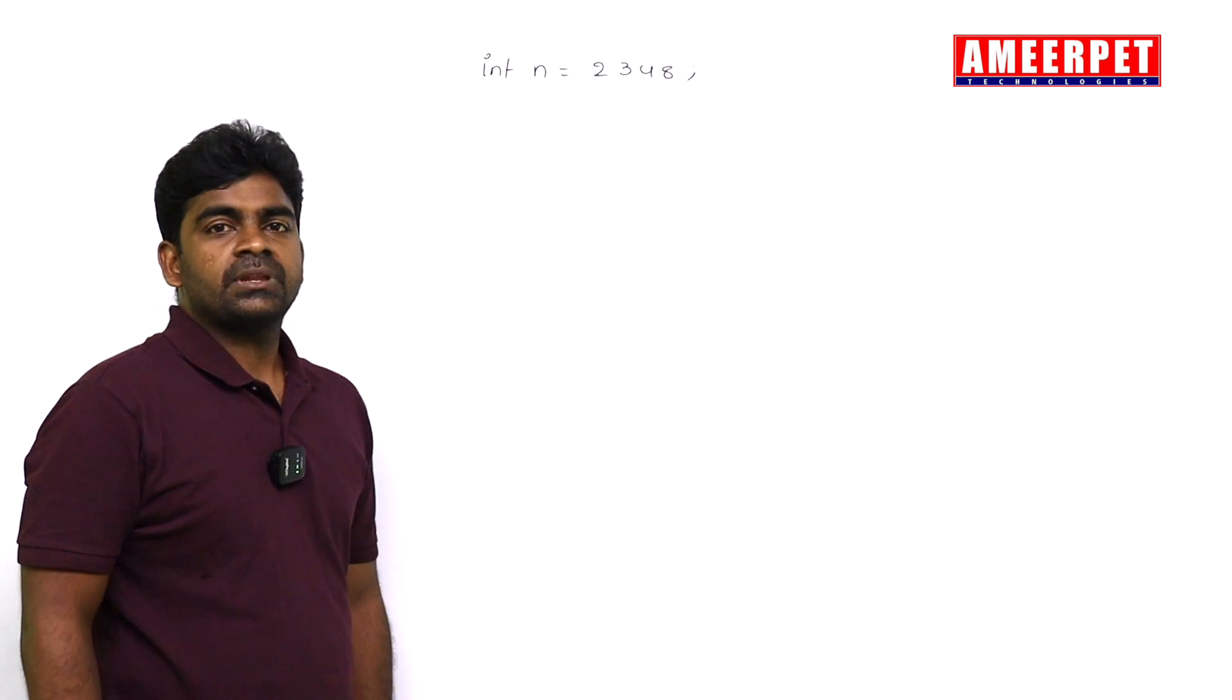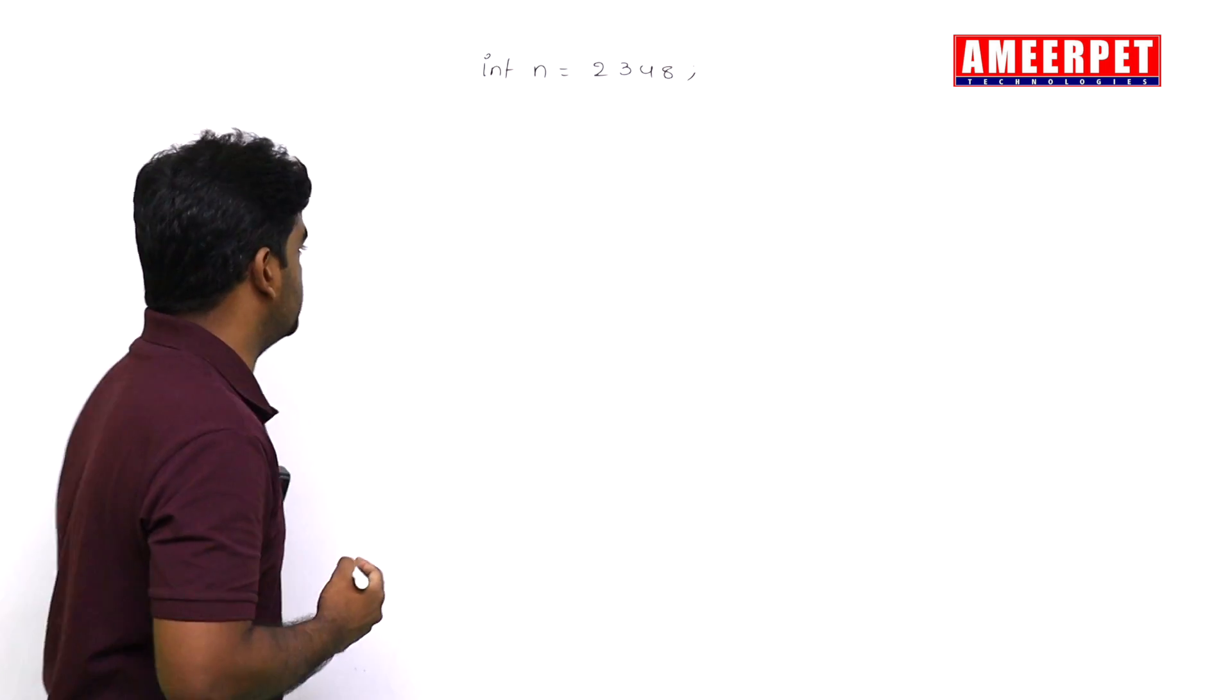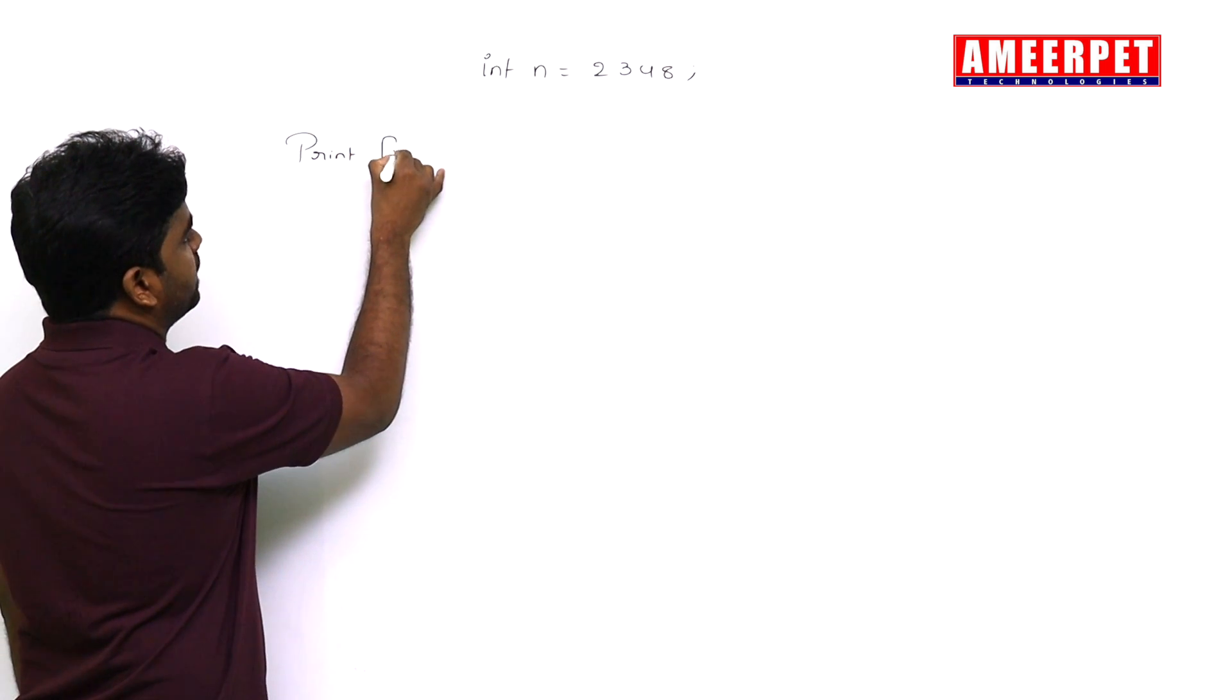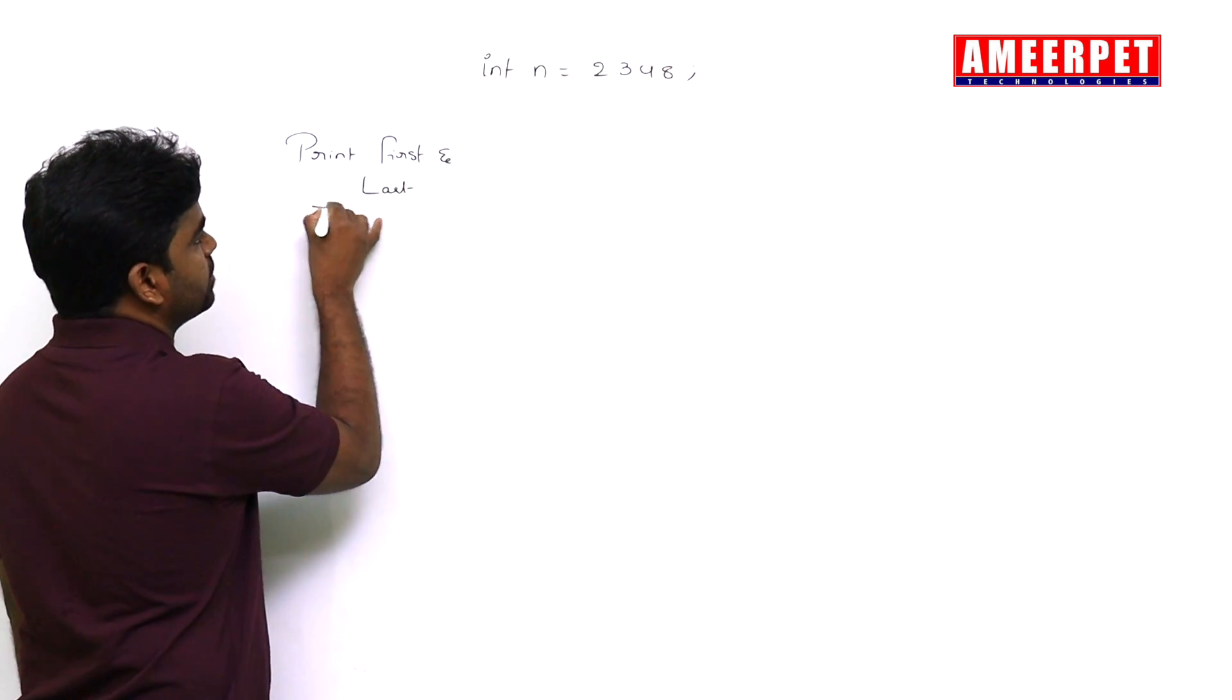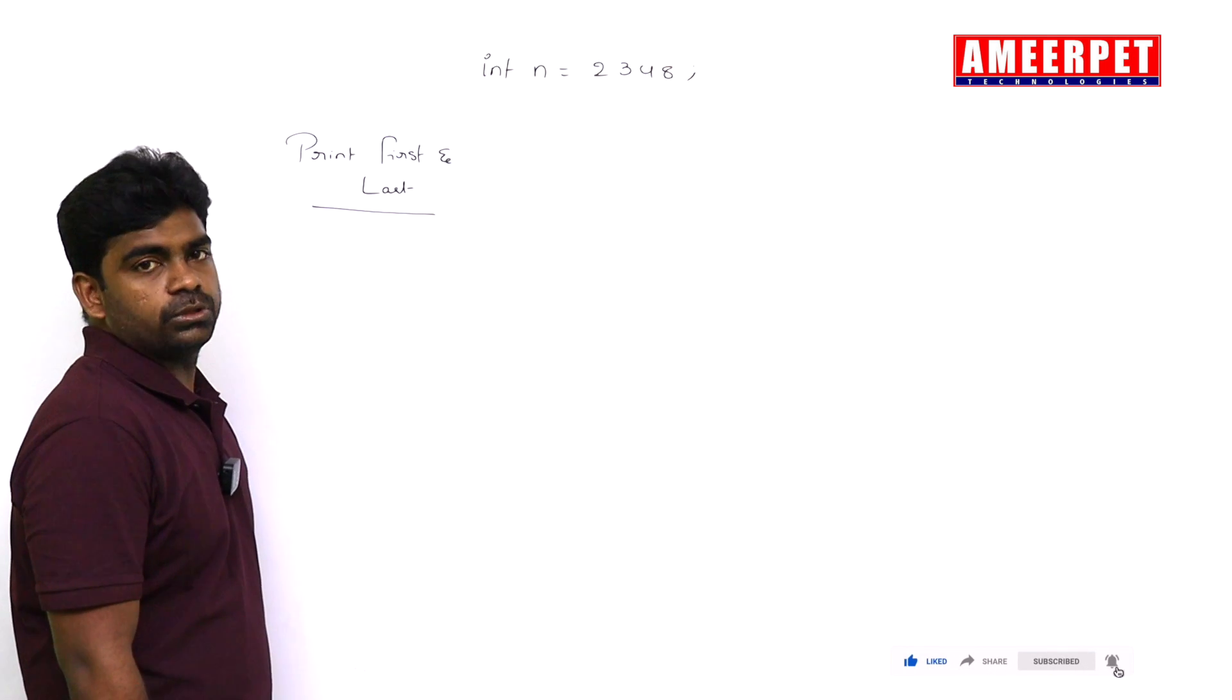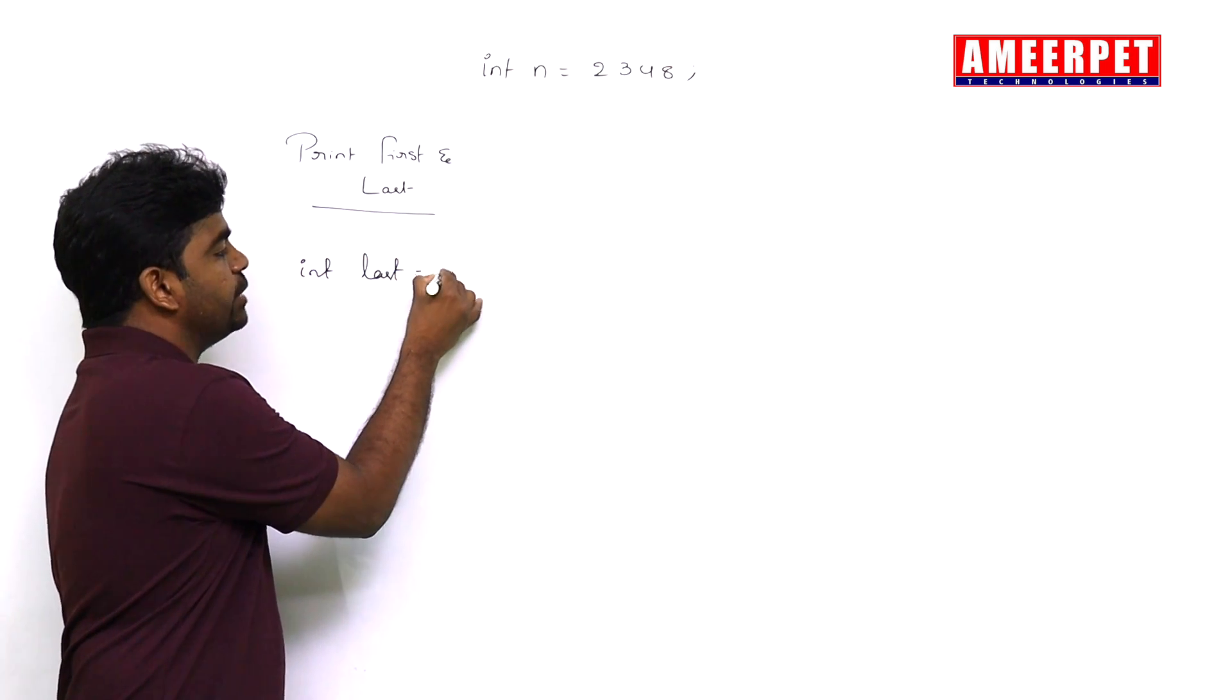Here is the number I have taken. In the last video I clearly explained how to find the first digit. First, print first and last digit. I am taking the number n equals to 2348.